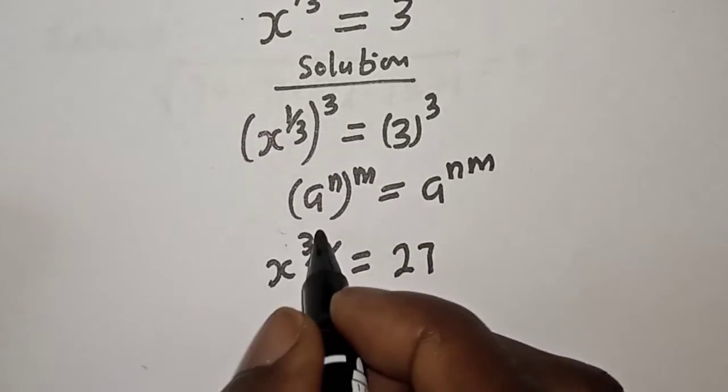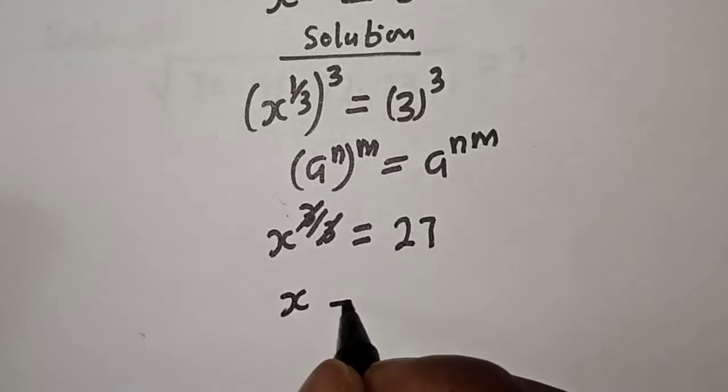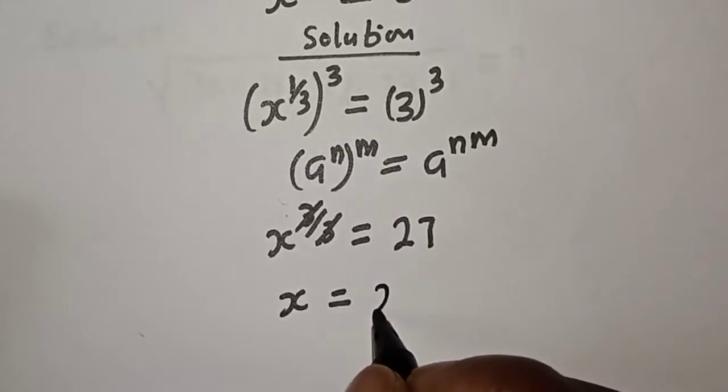And this one, we cancel this. x is equal to 27.